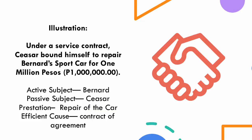To illustrate the elements of an obligation, let us look at this contract. Under a service contract, Cesar bound himself to repair Bernard's sports car for 1 million pesos. In this agreement, Bernard is the active subject — he is the one demanding the performance of the obligation, in whose favor the obligation is constituted. Cesar is the passive subject, bound to perform the prestation, that is, repairing the car. The repair of the car is the prestation — the subject matter of the obligation which has an economic value or is susceptible of pecuniary substitution in case of non-compliance. The agreement or contract is the efficient cause — the tie or vinculum by virtue of which the debtor has become bound to perform the prestation.